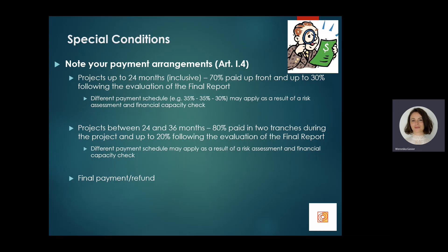In the majority of projects with a duration of up to 24 months, the first pre-financing payment will represent 70 percent of the total awarded grant. Up to 30 percent will then be paid upon receipt and successful evaluation of the final report. A different payment schedule might be applied at the discretion of Largas in instances where beneficiaries have weaker financial capacity, poor liquidity, poor track record in terms of repayments, or late reporting.